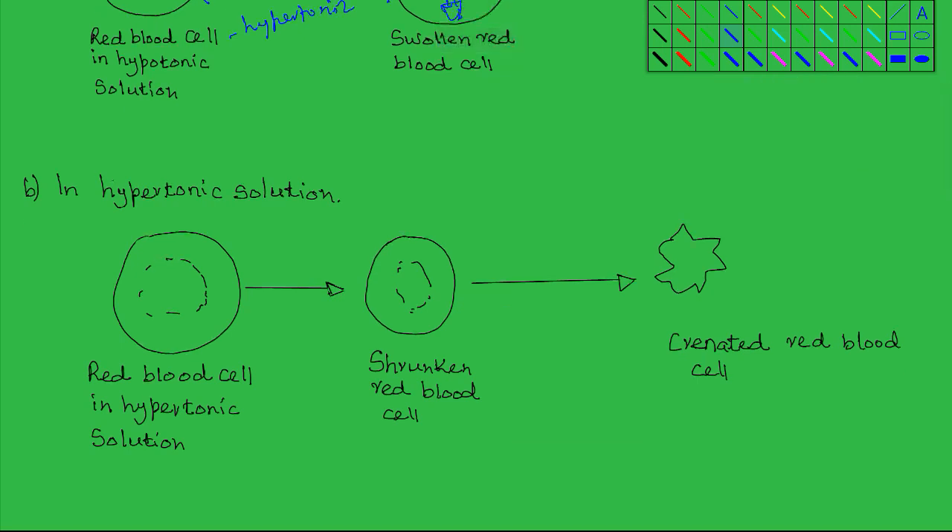Now on the other hand, when the red blood cell is placed in a hypertonic solution, meaning a solution that has a lower water concentration relative to that within the red blood cell, the red blood cell will be hypotonic to the surrounding hypertonic solution.